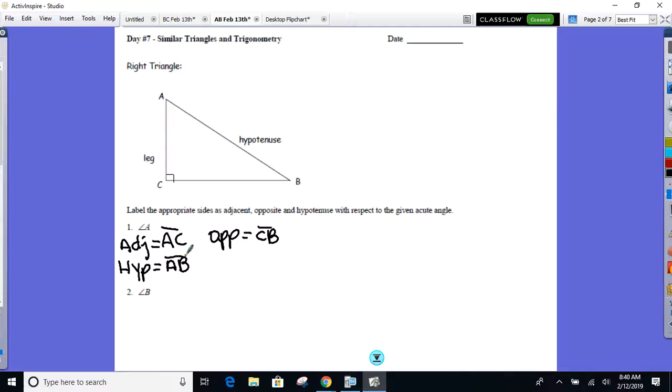Now look at angle B. What's still the hypotenuse? AB. But now, what's your adjacent side? What's the leg adjacent to angle B? CB. And what side's opposite? AC.